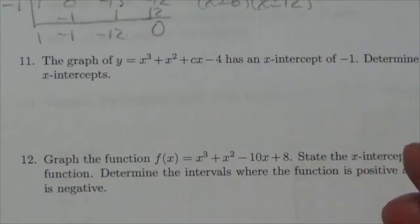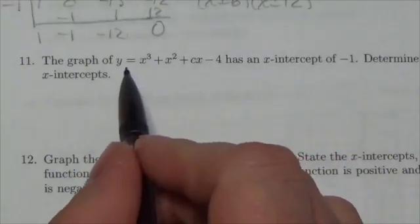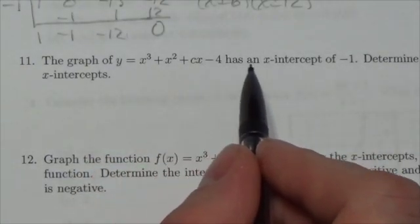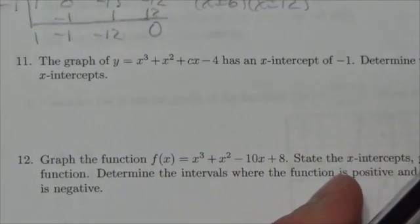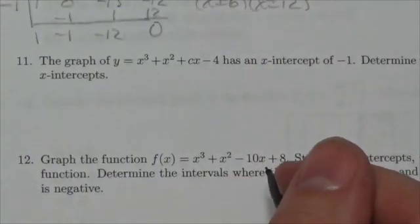Hi, everyone. This is the Math 30-1 functions review, and this is question 11. It says the graph of, and I'll give you this expression right here, with a parameter in it, the c here, has an x-intercept of negative 1. So what we're supposed to do, the rest of the question says, determine the value of c and then the remaining x-intercepts.